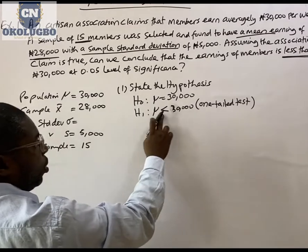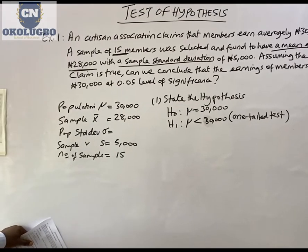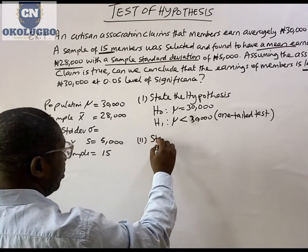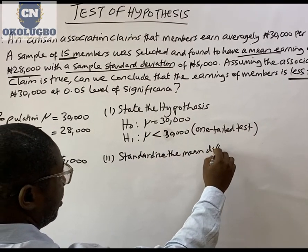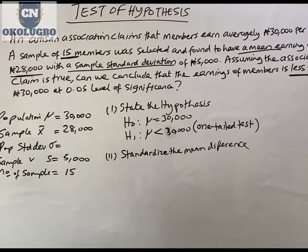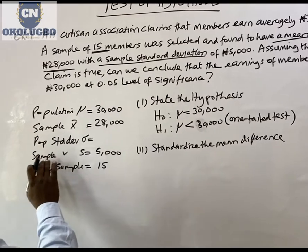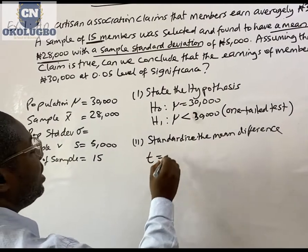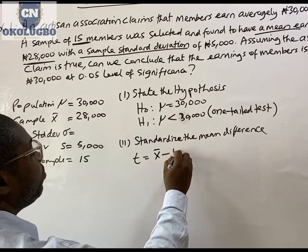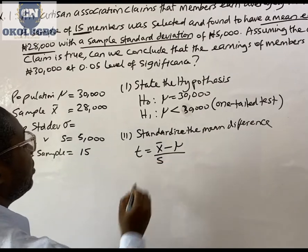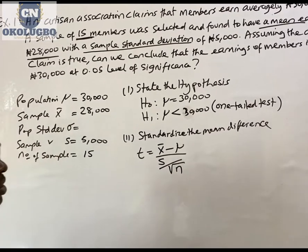The first thing we do is to state the hypothesis. The null hypothesis is that the mean is 30,000. The alternative hypothesis — which we are contesting — is that the mean is less than 30,000. Because it is less than, this is a one-tailed test, and specifically a left-tailed test. The second thing we do is to standardize the mean difference. Because the sample is less than 30, we are going to use the T-statistic, which is: sample mean minus population mean, divided by the sample standard deviation over the square root of the number of samples.